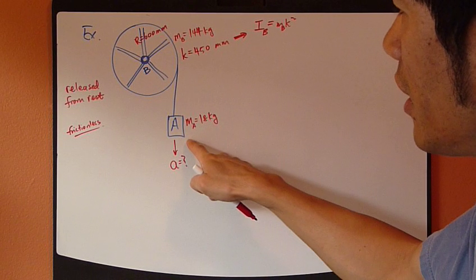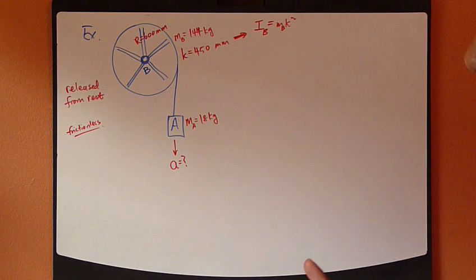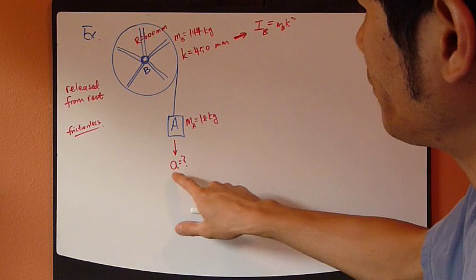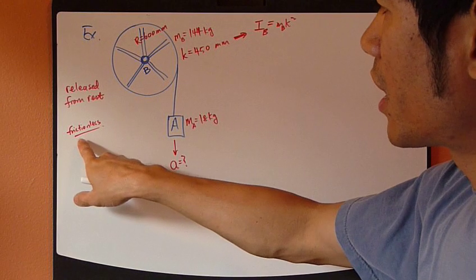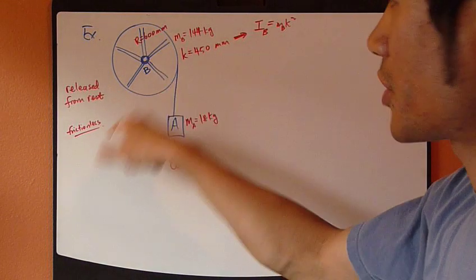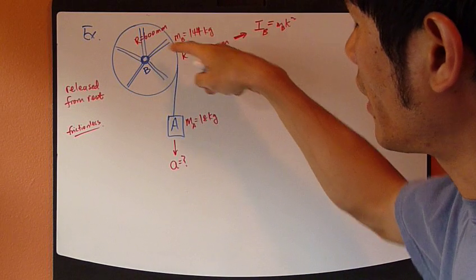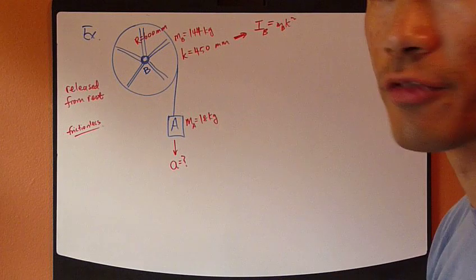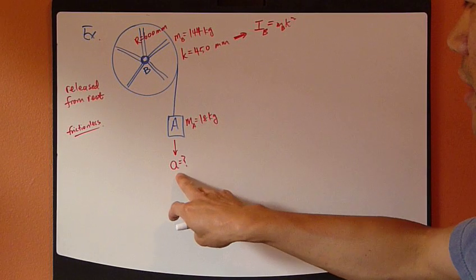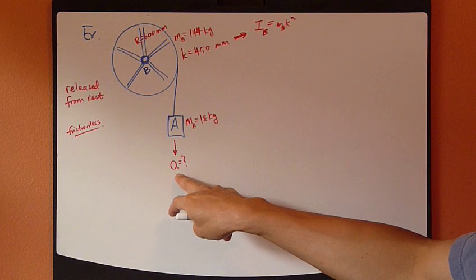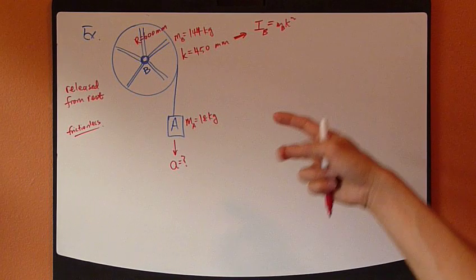You're asked to find the acceleration at this instant if it's released from rest. It is assumed that everything is frictionless — no friction at the wheel, no friction between the rope and the wheel, and air friction is also ignored. So you're asked to find acceleration, which makes this a kinetic-type problem.